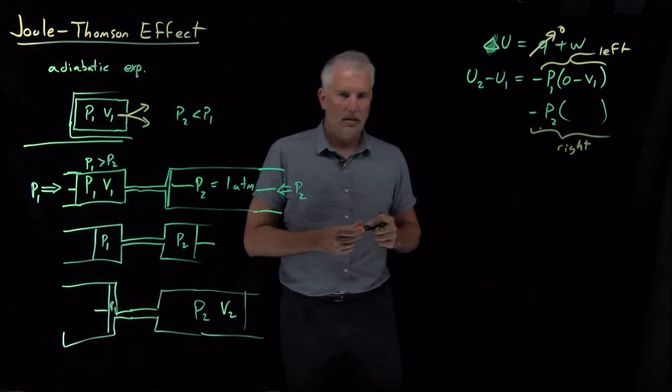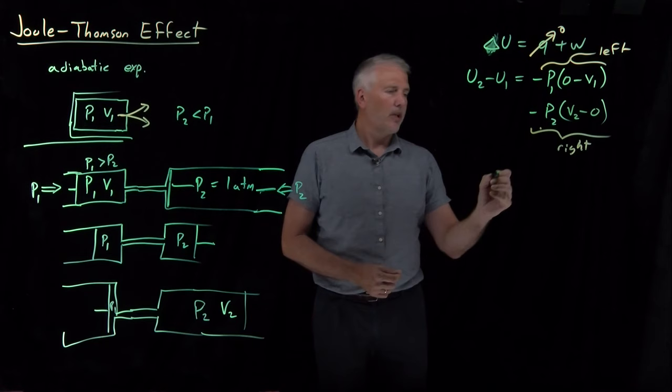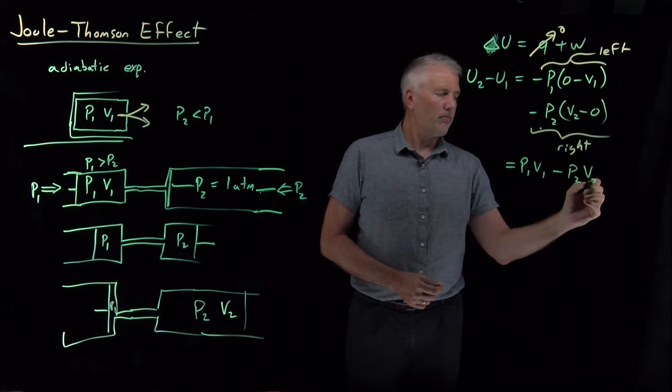And then I can add to that the PV work on the right. External pressure in this case is P2. And the change in the volume in this case, I've gone from an initial volume of zero to a final volume of V2. So my volume change is V2, final, minus zero for my initial volume. And I can rewrite all those, so I've got a minus P1 times a minus V1, and I've got a minus P2 times a V2. So that's equal to U2 minus U1.